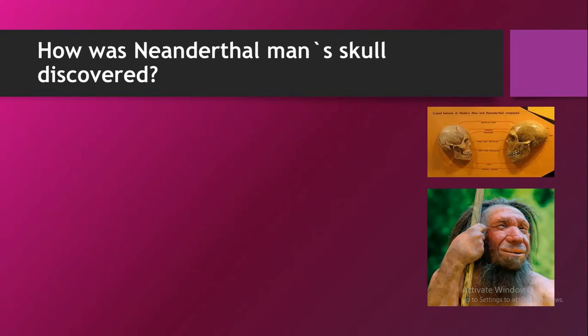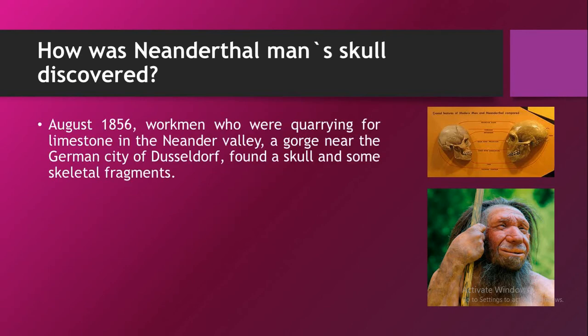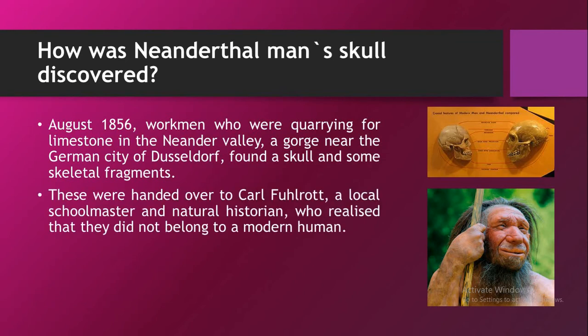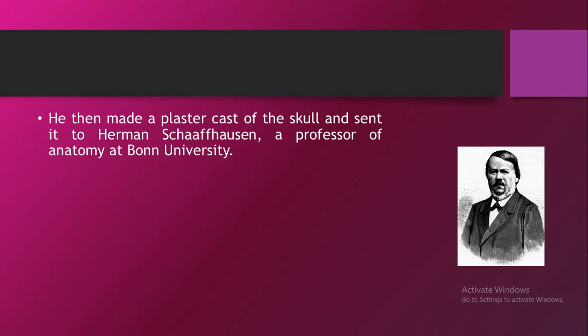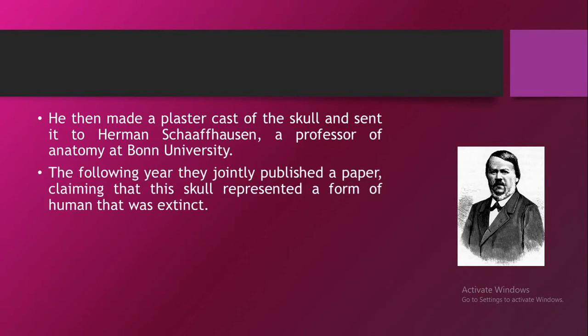How was Neanderthal man's skull discovered? In August 1856, workmen who were quarrying for limestone in the Neander Valley — a gorge near the German city of Dusseldorf — found a skull and some skeletal fragments. These were then handed over to Carl Fowlett, a local schoolmaster and natural historian, who realized that they did not belong to a modern human. He made a plaster cast of the skull and sent it to Hermann Karfusen, a professor of anatomy at Bonn University. The following year, they jointly published a paper claiming that this skull represented a form of human that was extinct.